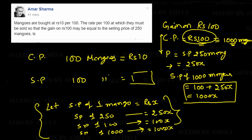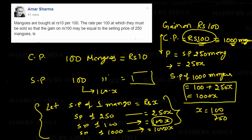Selling price of 1000 mangoes equals cost price plus profit, giving us 1000X = 100 + 250X. Solving this, X equals 100 upon 750. Our required answer is the selling price of 100 mangoes, which is 100X — substituting X gives us 100 multiplied by 100/750, which simplifies to Rs.40/3. So the selling price of 100 mangoes is Rs.40/3.